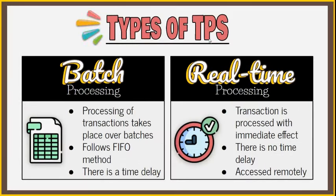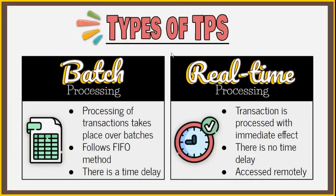There are basically two types of transaction processing systems. First is batch processing TPS, where transactions are collected, combined, and grouped in batches. It generally follows the first-in-first-out method and there is usually a time delay in this type of processing. The second is real-time processing TPS, where every single transaction is processed with immediate effect and provides instant verification. There is no time delay and systems can be accessed remotely and over the cloud.